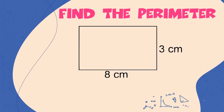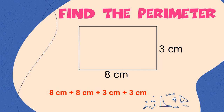What about this? How do we find the perimeter? Do you remember? That's correct — we add up all the sides. So when we do that, we should have 8 plus 8 plus 3 plus 3. We can't forget our units, so that's 8 centimeters plus 8 centimeters plus 3 centimeters plus 3 centimeters, and when we do that, we get a total of 22 centimeters.